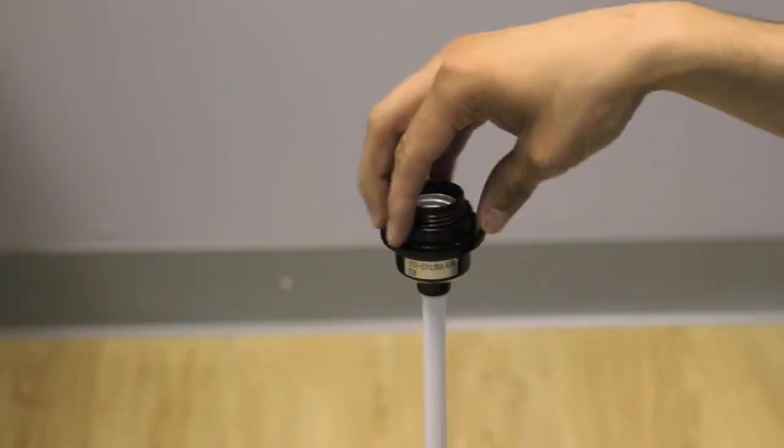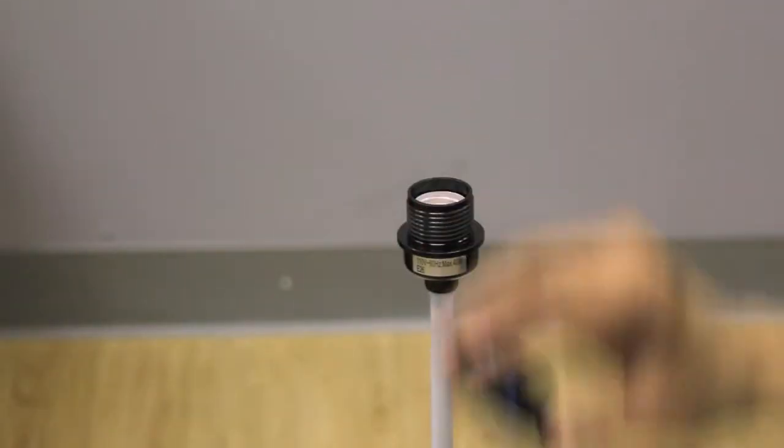Remove Part E from Part D, turning the retainer ring counter-clockwise.